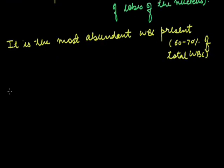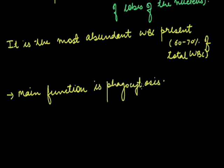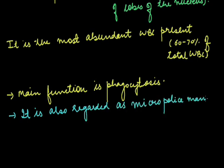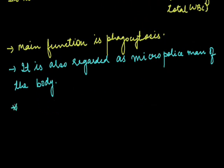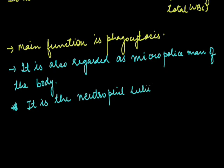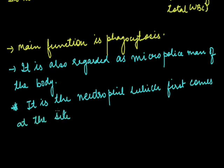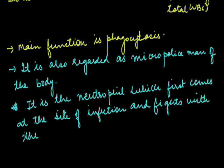The main function of neutrophil is phagocytosis. It is also regarded as the micropoliceman of the body. It is the neutrophil which first comes at the site of infection and fights against infection.